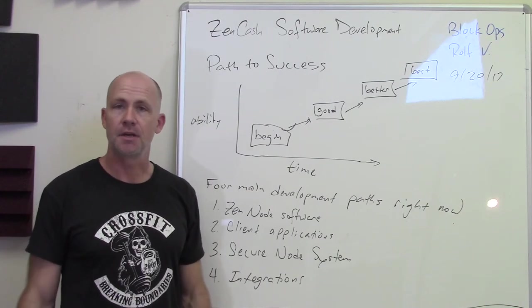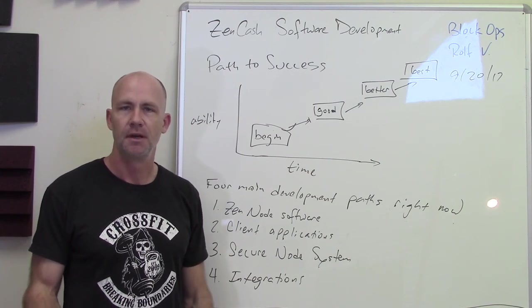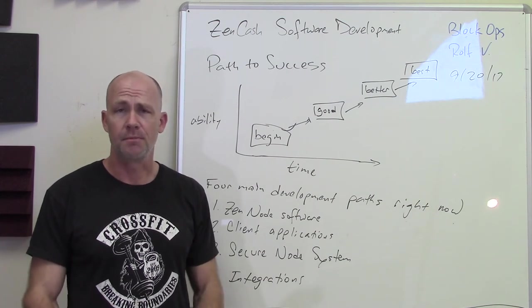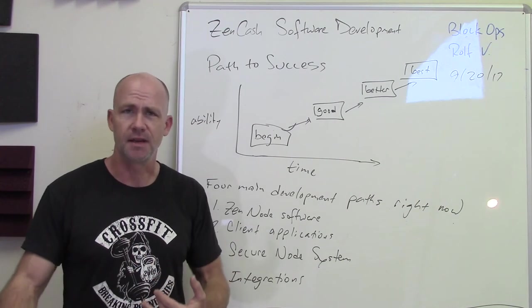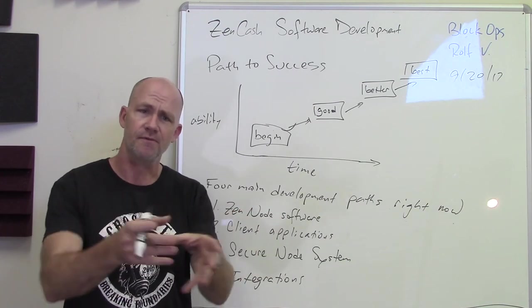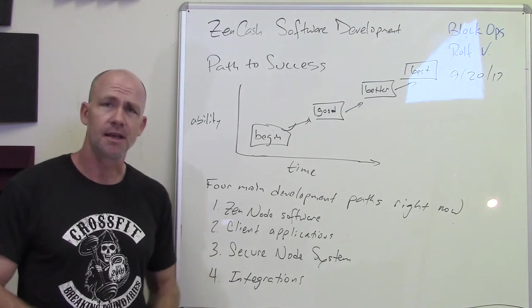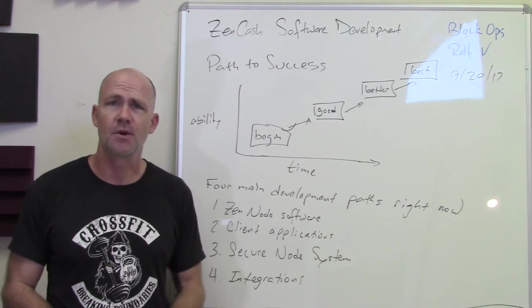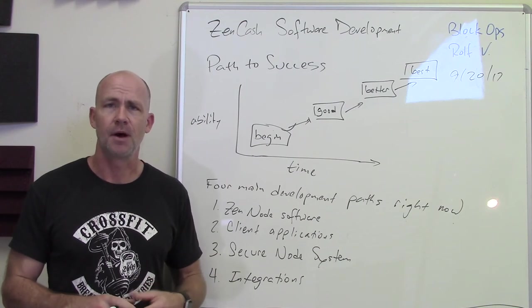I'm here to give you an update on Zencash software development progress. This is Rolf, also known as BlockOps, if you see me on the Zencash Slack channel. I want to start big picture — we get a lot of different questions, and we have a lot of different people involved with Zencash, everybody with their own vision. I get to see a lot of different parts happening at once and can help explain what's going on at a high level.